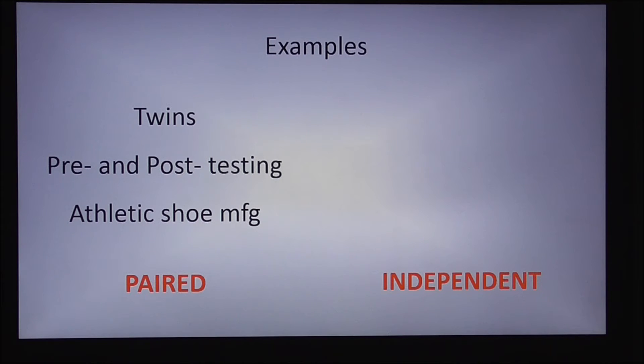Some examples of independent variables, two sample variables, might be housing prices. Maybe I'm looking at housing prices in one city versus housing prices in another city. I really wouldn't have any reason to pair up those houses from one city to the next. Or maybe I'm looking at birth weights of babies born in different countries. There might not be any connection between babies in one country and babies in another country, and so I wouldn't have a reason to pair those up necessarily.